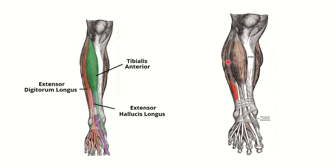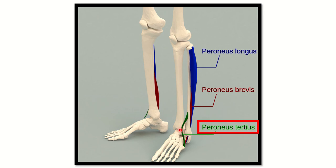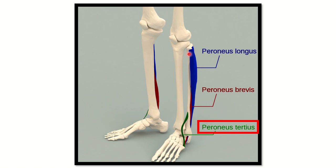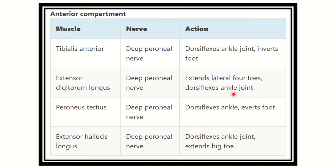In another picture, we can see tibialis anterior, extensor hallucis longus, and lateral to this is extensor digitorum longus. Two other muscles are present — they are components of the lateral compartment or peroneal compartment. We can see the peroneus tertius muscle, which is also present in the anterior compartment because it lies anterior to the lateral part of the tibia and fibula. The two lateral compartment muscles shown here are peroneus longus and peroneus brevis.